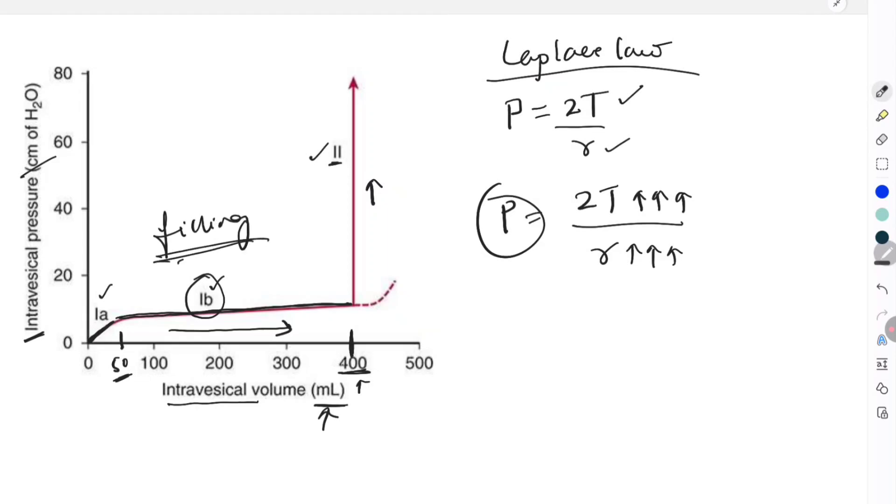As soon as the volume reaches 400ml, the pressure is going to suddenly increase, and this increase in pressure is extremely important for micturition to occur. This is what we must write for the cystometrogram.